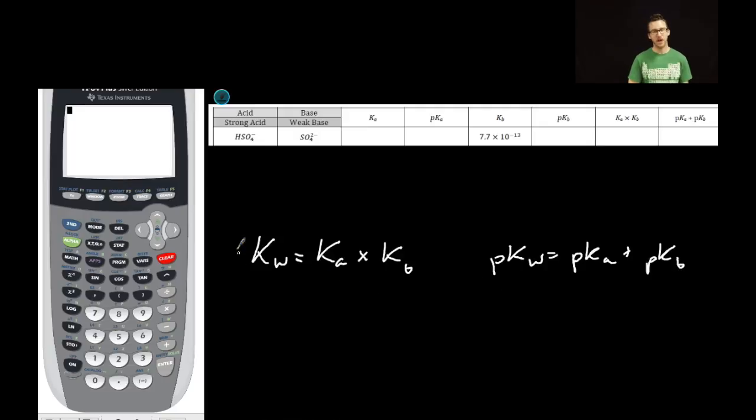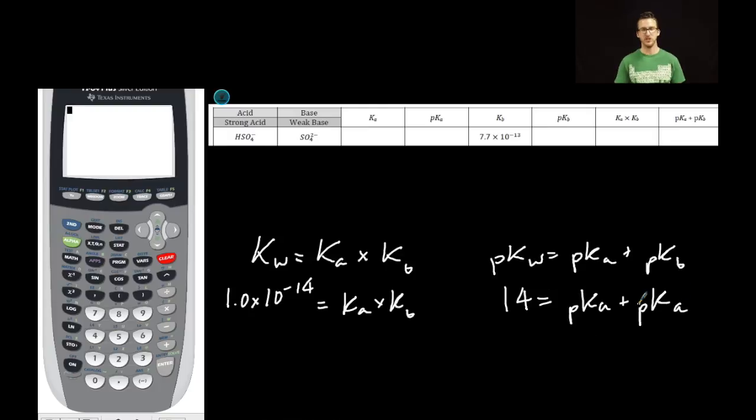And when we're at 25 degrees Celsius, Kw is equal to 1.0 times 10 to the minus 14, which leaves us with this expression at 25 degrees Celsius and this expression at 25 degrees Celsius. Again, these formulas are provided to you on the formula chart as is the constant when you're at 25 degrees Celsius.